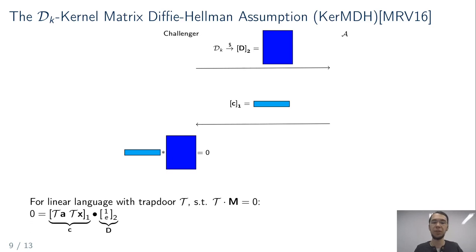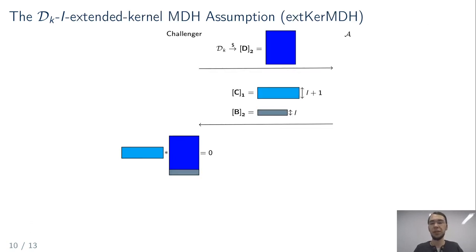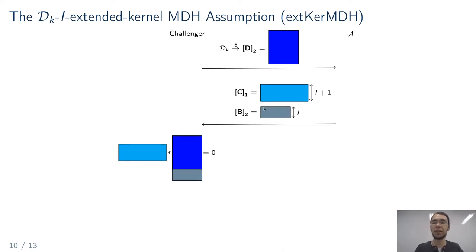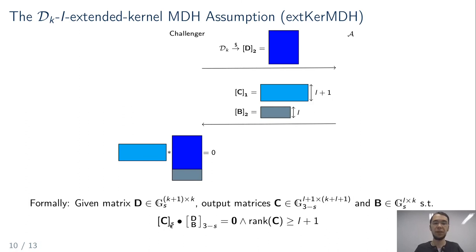In the extended kernel matrix Diffie-Hellman assumption, we make it easier for the adversary to find kernel elements by allowing it to add ℓ rows to the matrix. But in order to keep the assumption non-trivial, the adversary must also provide ℓ+1 linearly independent vectors in the kernel of the new extended matrix. Formally, the matrix C times [D combined with B] must be zero, and the rank of C must be at least ℓ+1. The parameter ℓ controls how many linearly independent kernel vectors the adversary must provide.